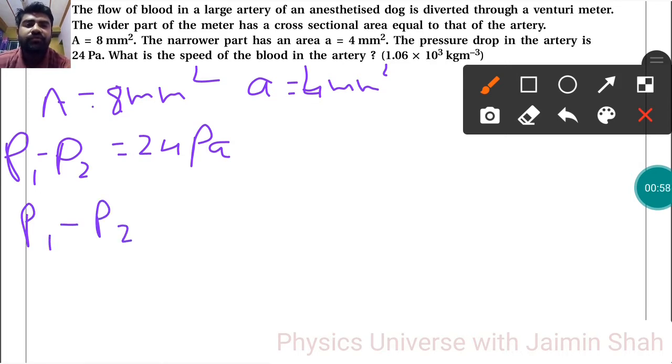P1 minus P2 equals half rho V1 squared, bracket A upon a whole squared minus 1.